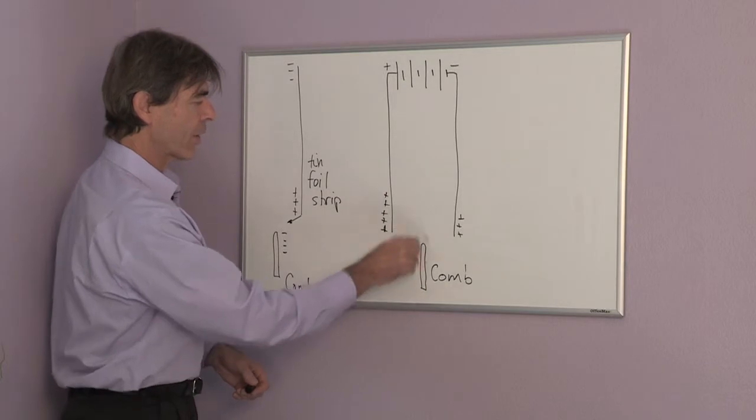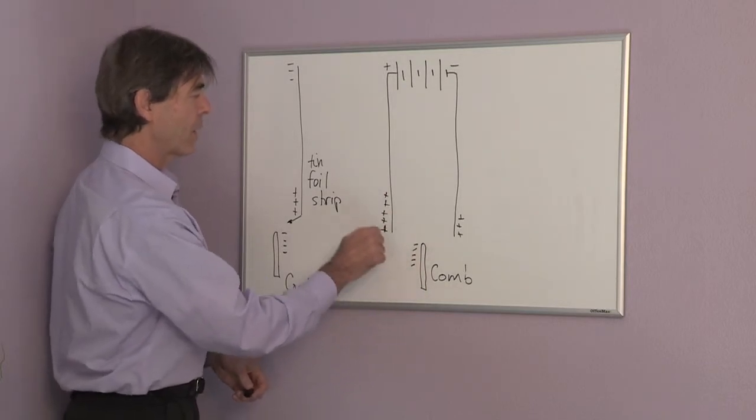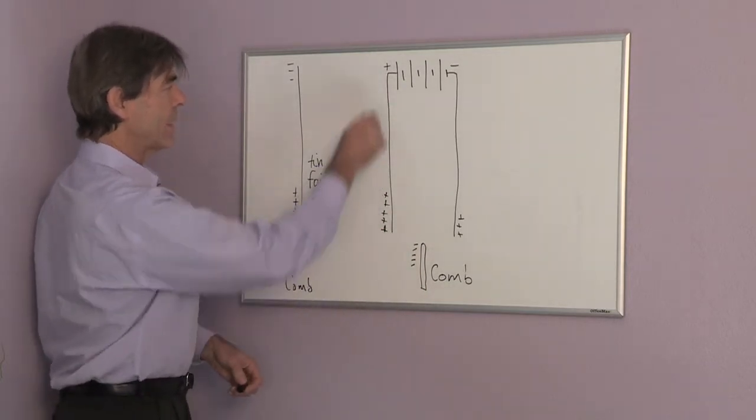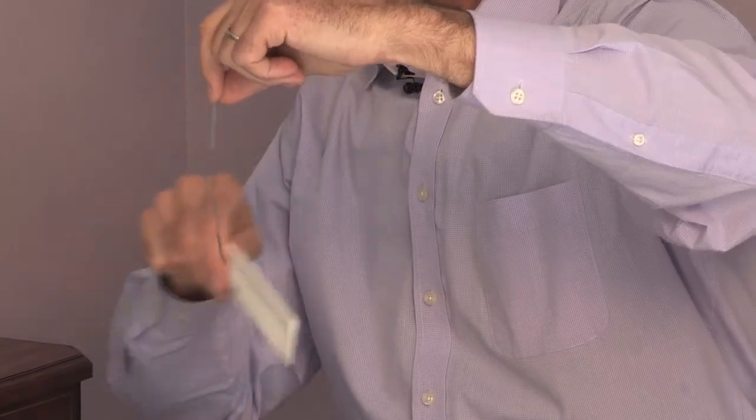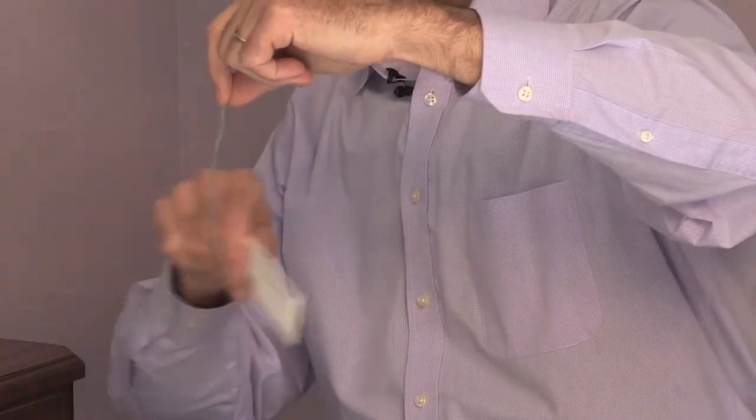So to see whether or not our comb is negatively charged, we would have to see, is the positive side of the foil attracted more than the negative side. Thank you for watching.